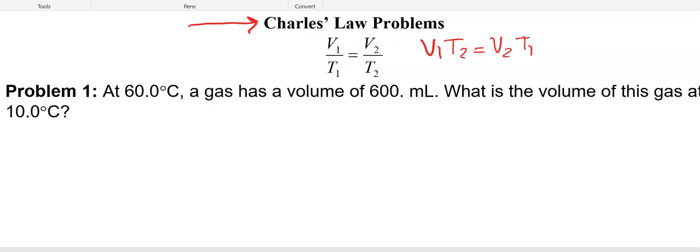So now let's read our problem. At 60 degrees C, a gas has a volume of 600 milliliters. What is the volume of this gas at 10 degrees C? So the first thing we have to do is we have to remember that gas law problems need to be converted to Kelvin. So to get from C to Kelvin, we remember that our Kelvin temperature is degrees C plus 273.